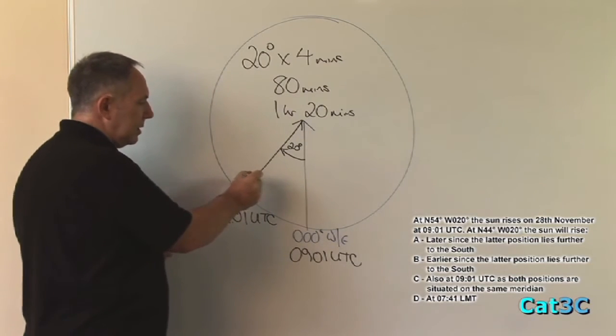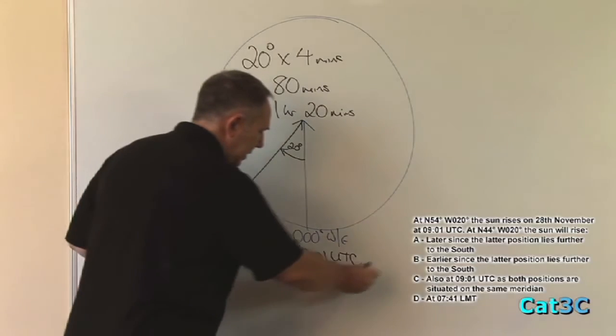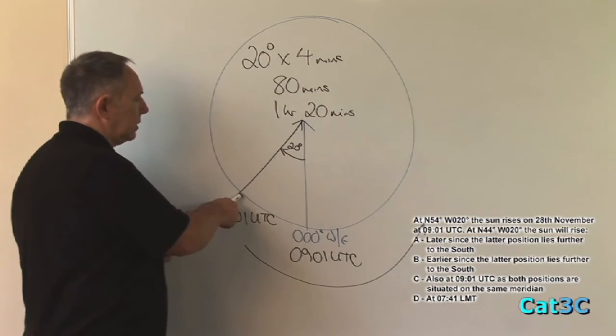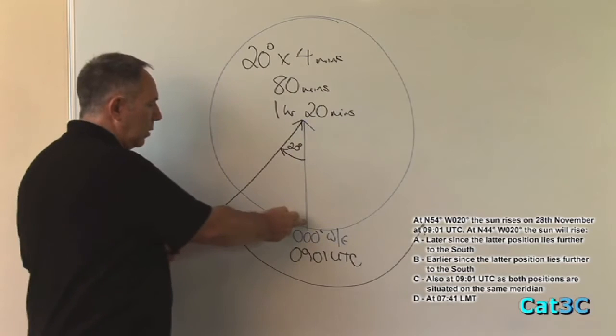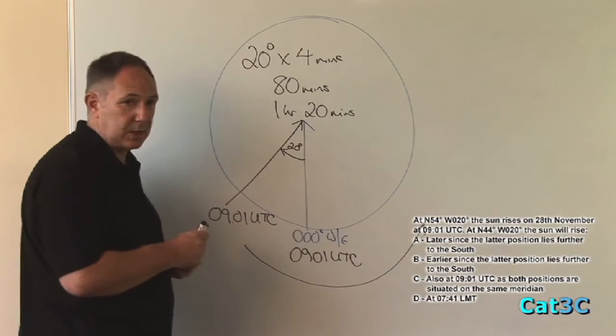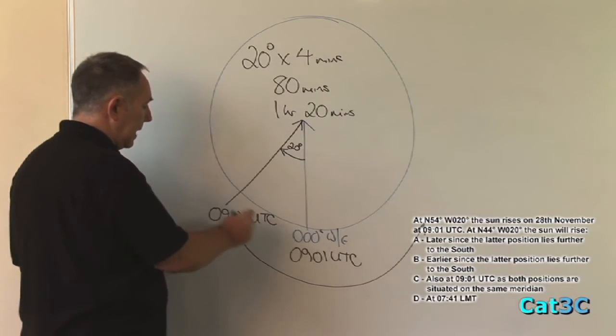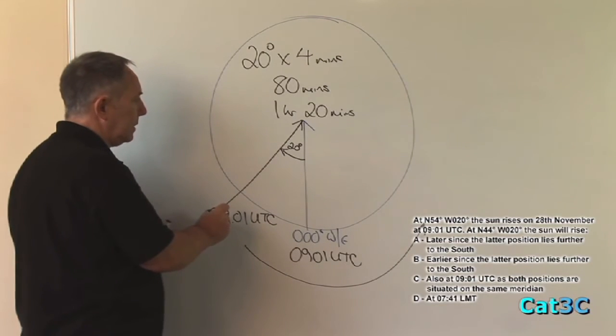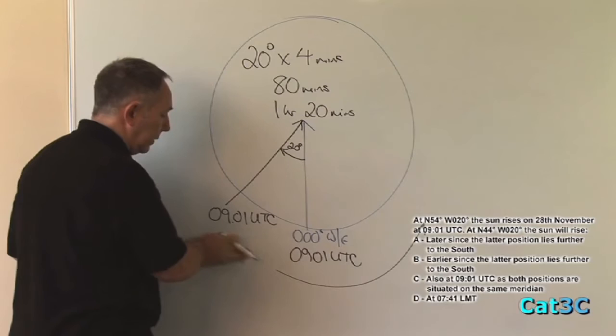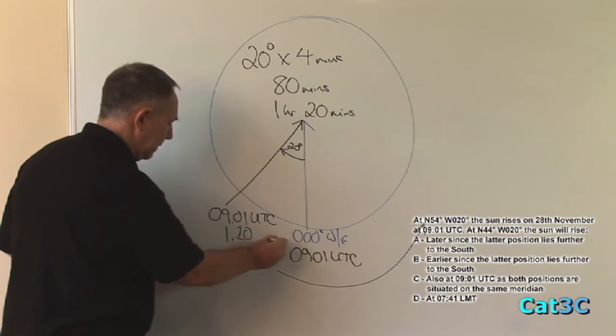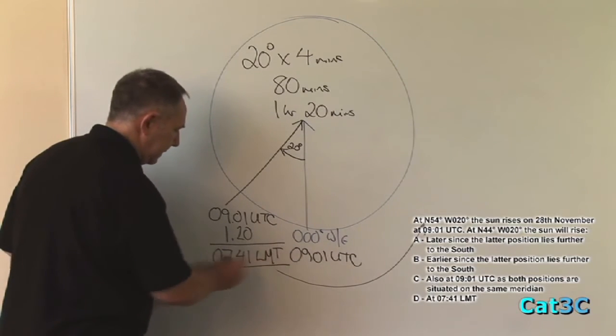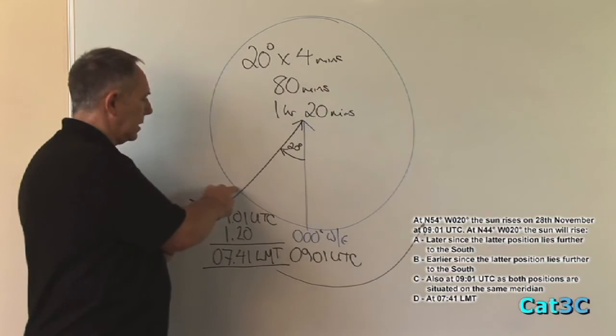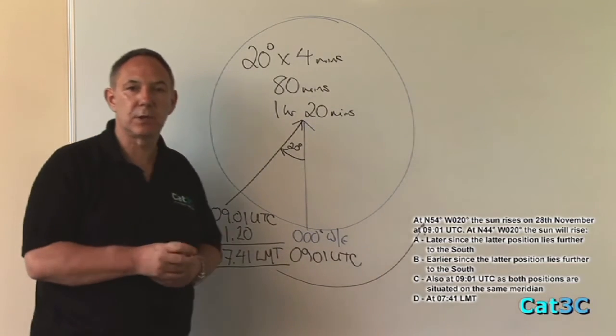Being to the west and remembering that the earth rotates in an easterly direction, the local time at west 20 will be less than the local time at Greenwich. The local time at Greenwich is equal to UTC at Greenwich. So what I have to do to calculate the local time at west 20 is subtract 1 hour and 20 minutes from 0901. That's 1 hour 20, which gives me 0741 local mean time. So that's the time of sunrise at north 54 degrees, west 20.